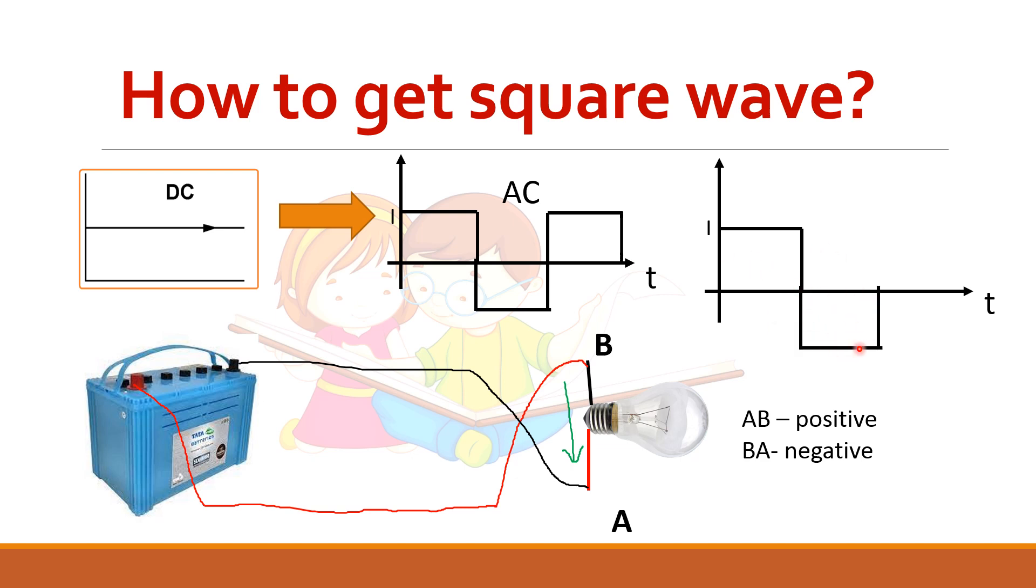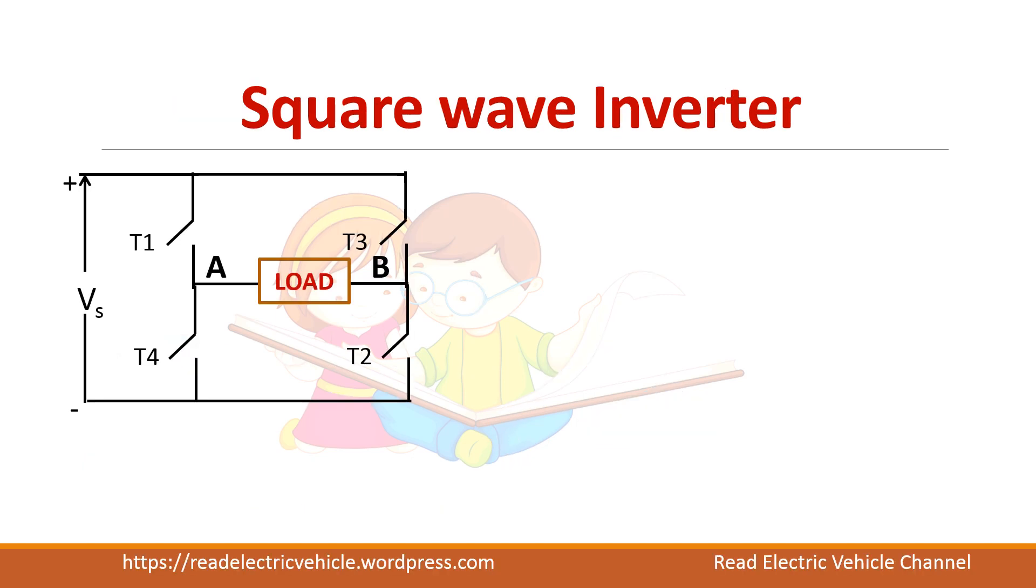If I repeat this sequence, that is changing the connection from A to B again and again, I can get a sequence of pulses, that is a square wave output. I cannot do it manually but I can use some sort of switches to make the connection again and again. This is the circuit to get a square wave output. You have four switches with the input supply DC connected at one end, and the load is connected between the two bridges. This is one leg and this is another leg. In between that the load is connected here. The load is considered to be an R load.